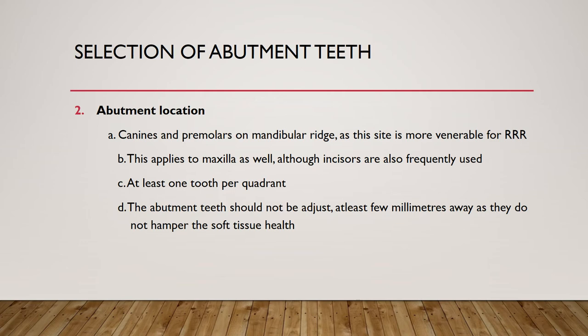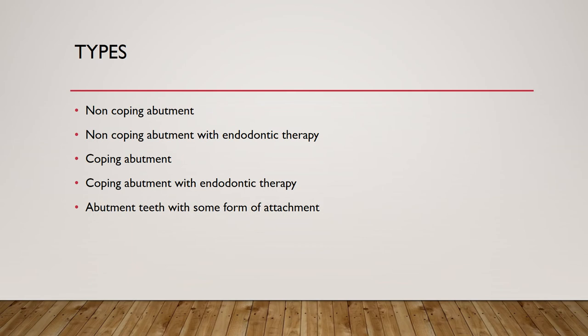The mandibular arch is the ideal preferred location. At least one tooth per quadrant is recommended; bilateral is 100% better than unilateral to avoid unequal force distribution. Abutment teeth should also be spaced adequately so they do not hamper soft tissue health and can be maintained better.